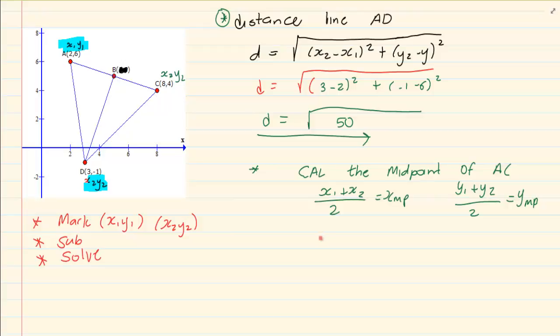So I'm going to have 2 plus 8 divided by 2 which is equal to 5. And I'm going to have 6 plus 4 divided by 2 which is equal to 5. So our midpoint is 5, 5.